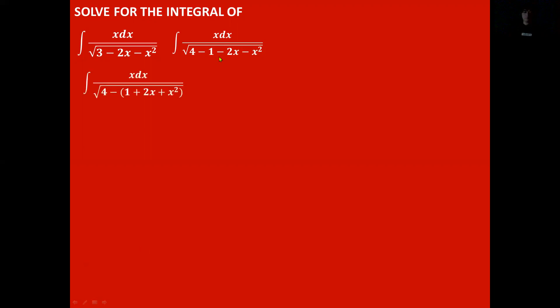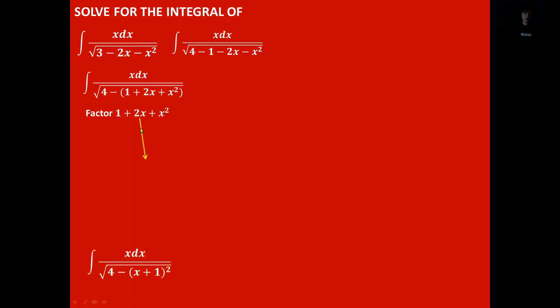So next, we can make this a perfect square trinomial by grouping the terms inside parentheses. Every time we have a perfect square trinomial, we factor them. So we factor the expression inside the parenthesis and it becomes x plus 1 squared. Our integral simplifies to x dx all over the square root of 4 minus the square of x plus 1.